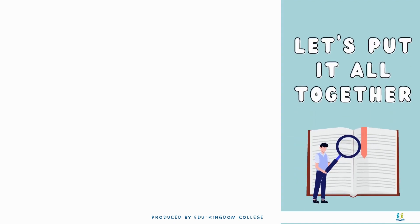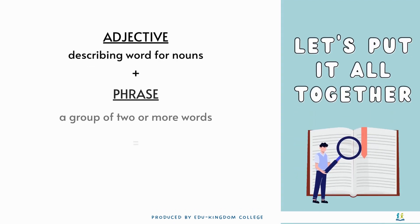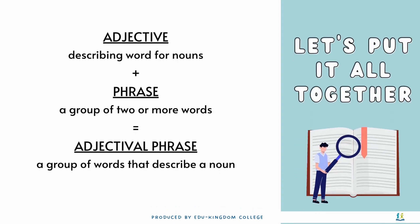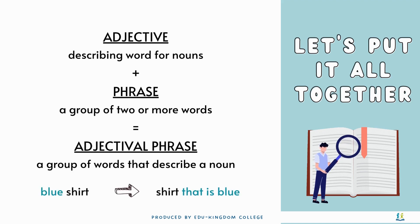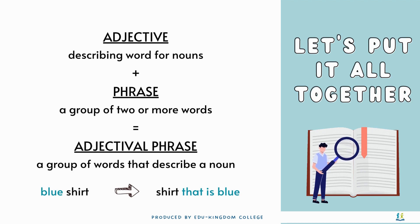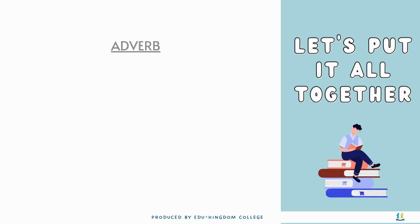Now let's put all that information together. An adjective describes nouns. A phrase is a group of words, so an adjectival phrase describes nouns in more than one word. For example, a simple adjective is 'blue shirt.' An adjectival phrase is 'a shirt that is blue.'